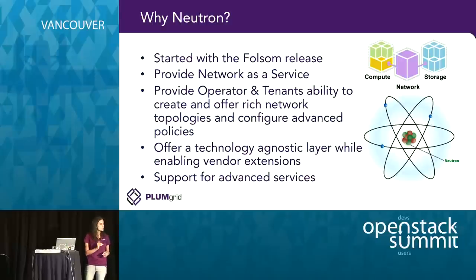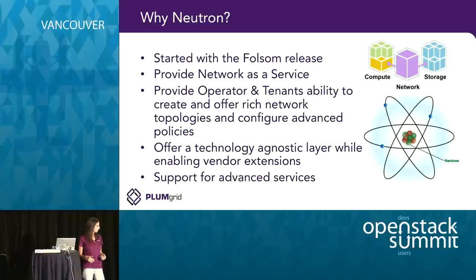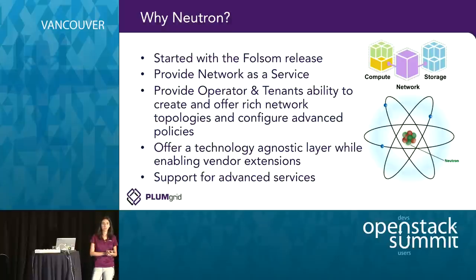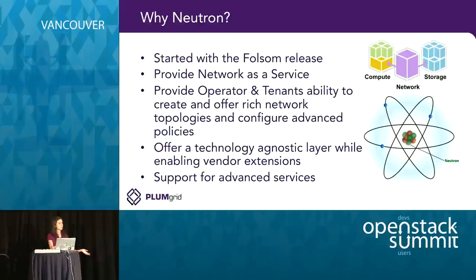Being technology-agnostic means that Neutron provides an API layer that abstracts network resources to such a simple concept that users can consume those resources without having to worry about whether it's implemented using VLANs, overlay networks, or whatever other magic is used under the covers. This abstraction layer is important for every user because it gives you the ability to swap vendors in the back-end — you have a consistent API, consistent integration, and as you evaluate different options, you can swap and replace back-end components, each giving different performance, scalability, and feature sets.